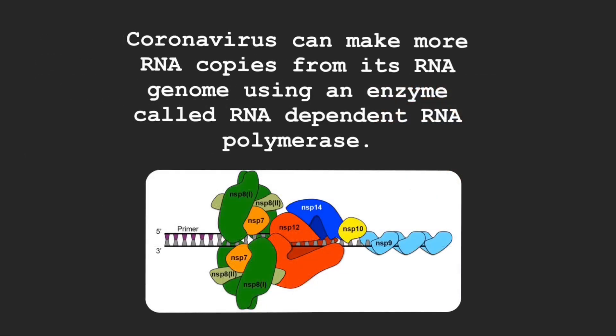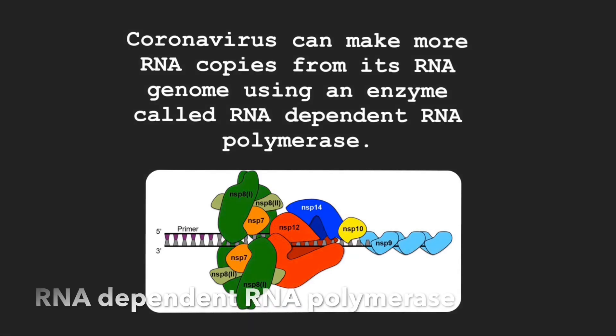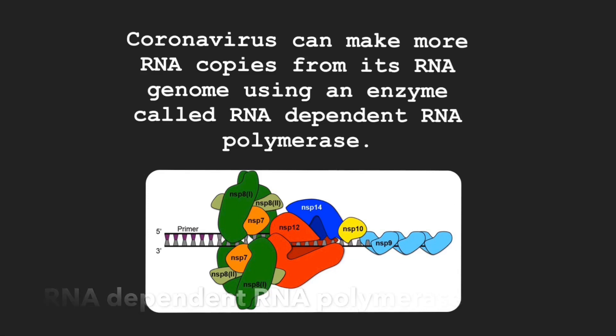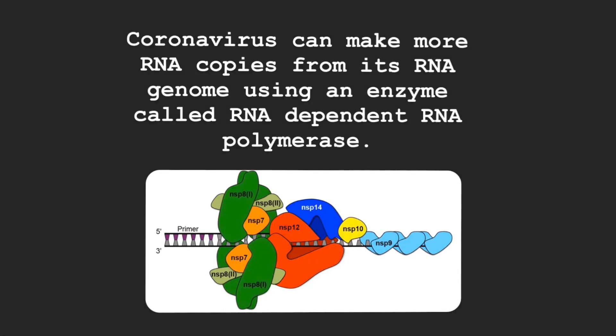Let's talk about replication. Coronavirus has an infectious RNA genome. It makes more copies of its RNA genome using an enzyme called RNA-dependent RNA polymerase, encoded by protein NSP12. This is fascinating because most organisms we think about in nature have a DNA genome that makes RNA. However, more and more organisms scientists are finding have the ability of making RNA from RNA as well.